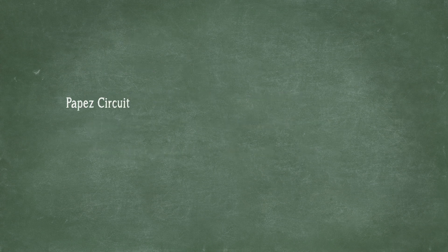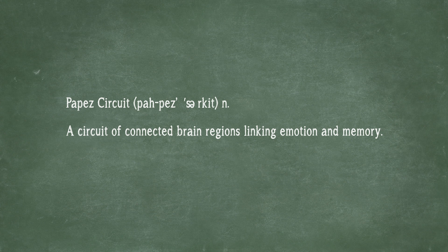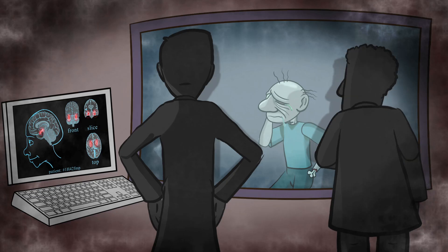Amygdala is part of the Papez circuit. This system was discovered by James Papez, who used the rabies virus to lesion different areas in the cat's brain. He found that the amygdala was physically connected to another region called the hippocampus, a little seahorse-shaped area that is needed to turn short-term memories into long-term memories. It's thought that this...